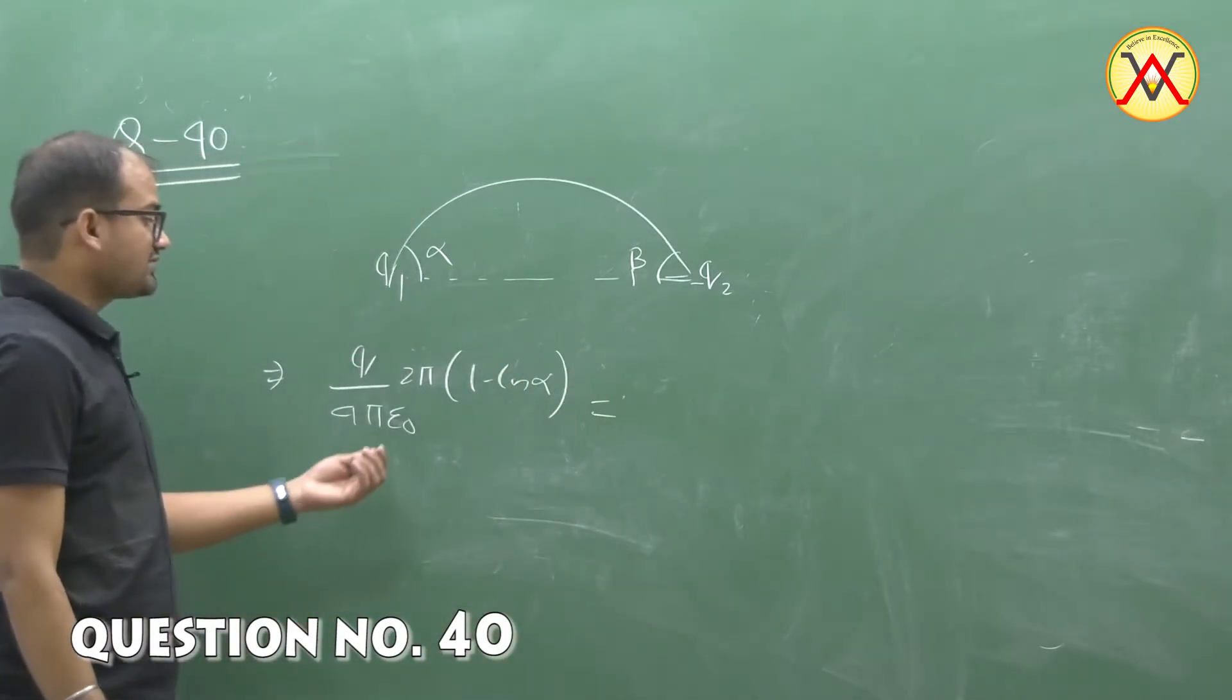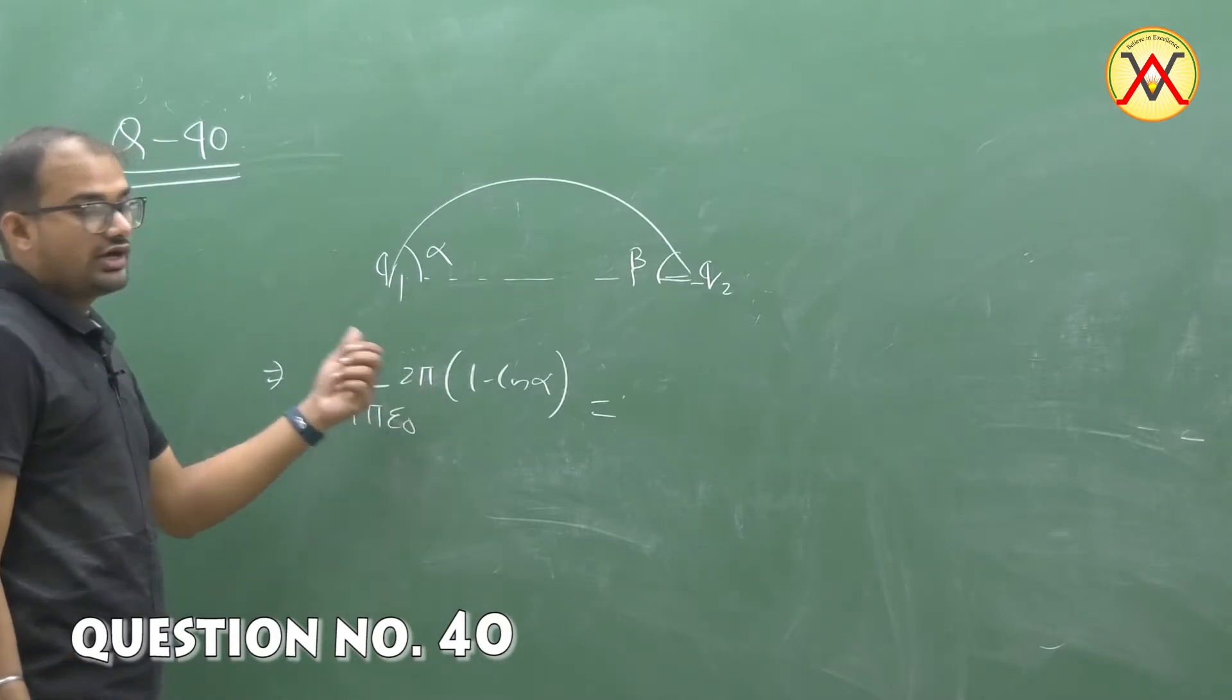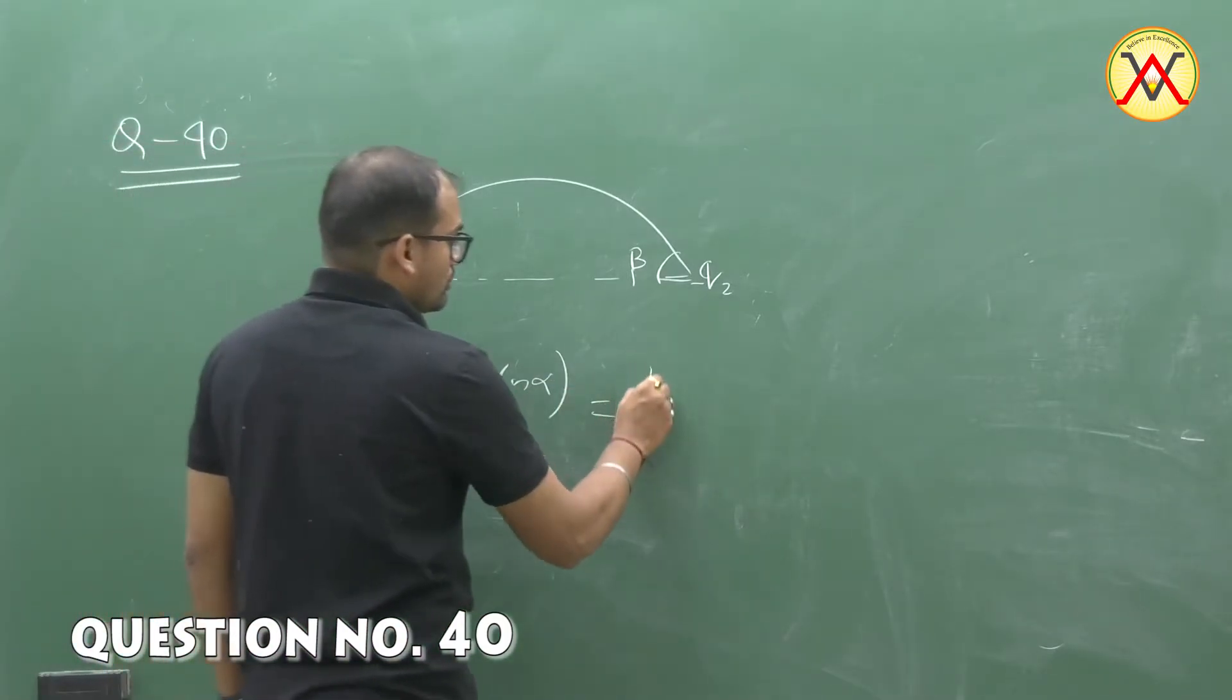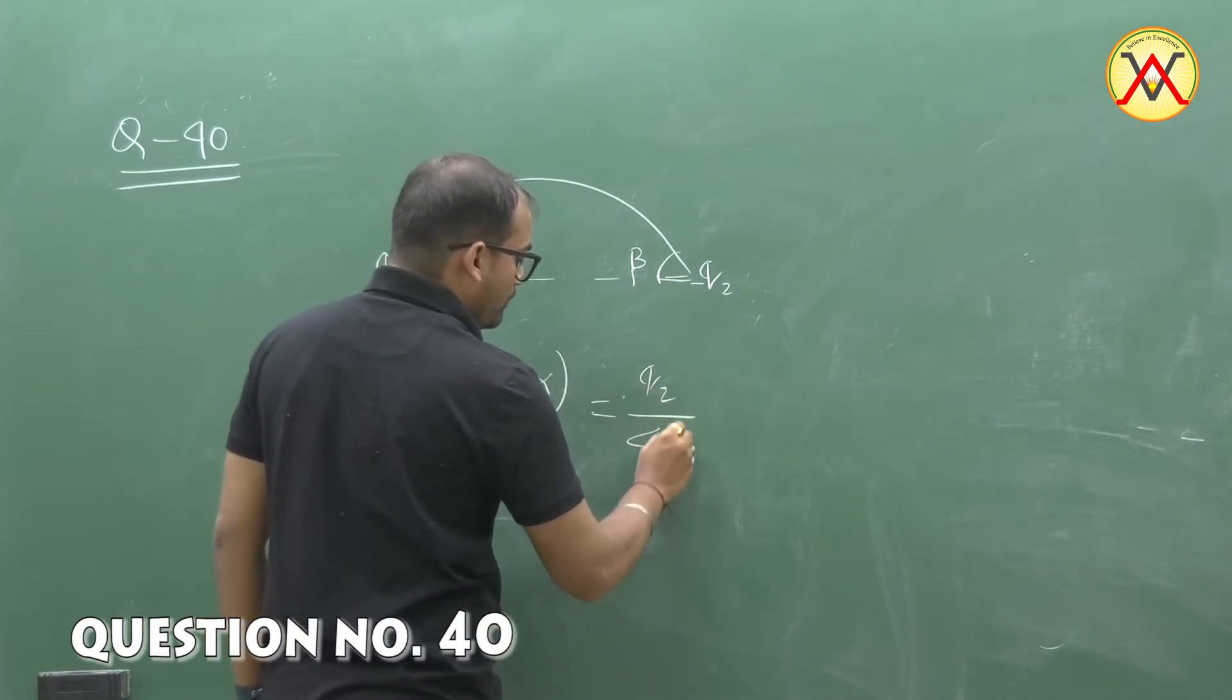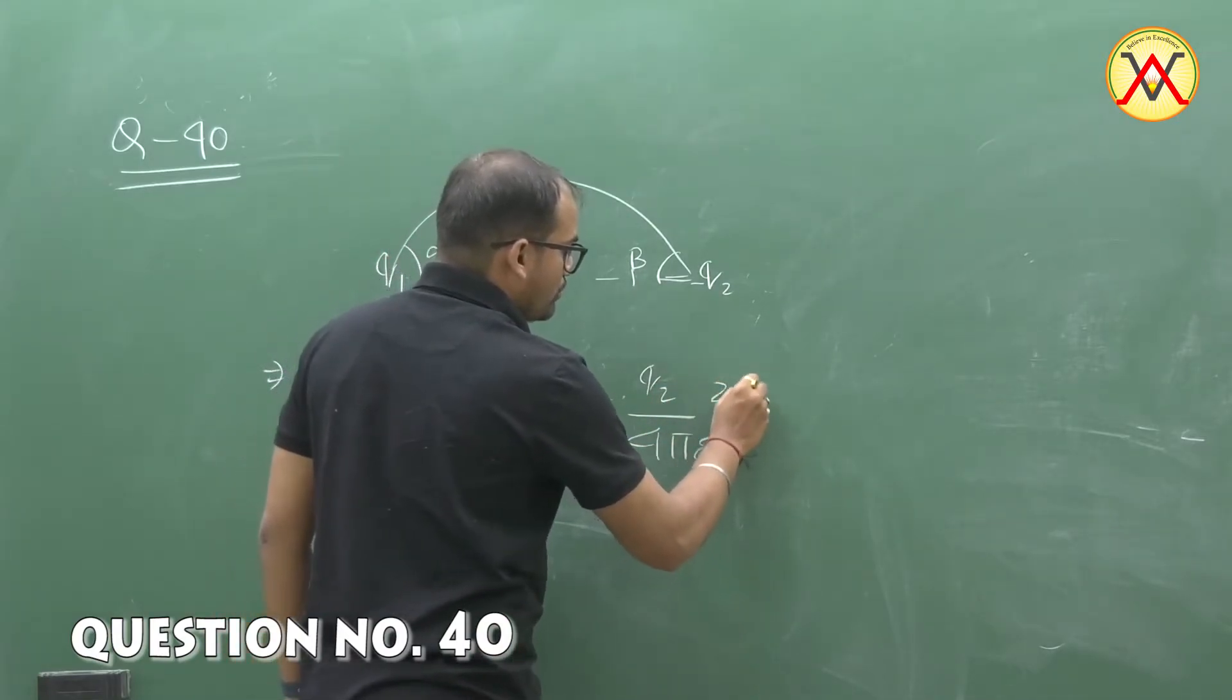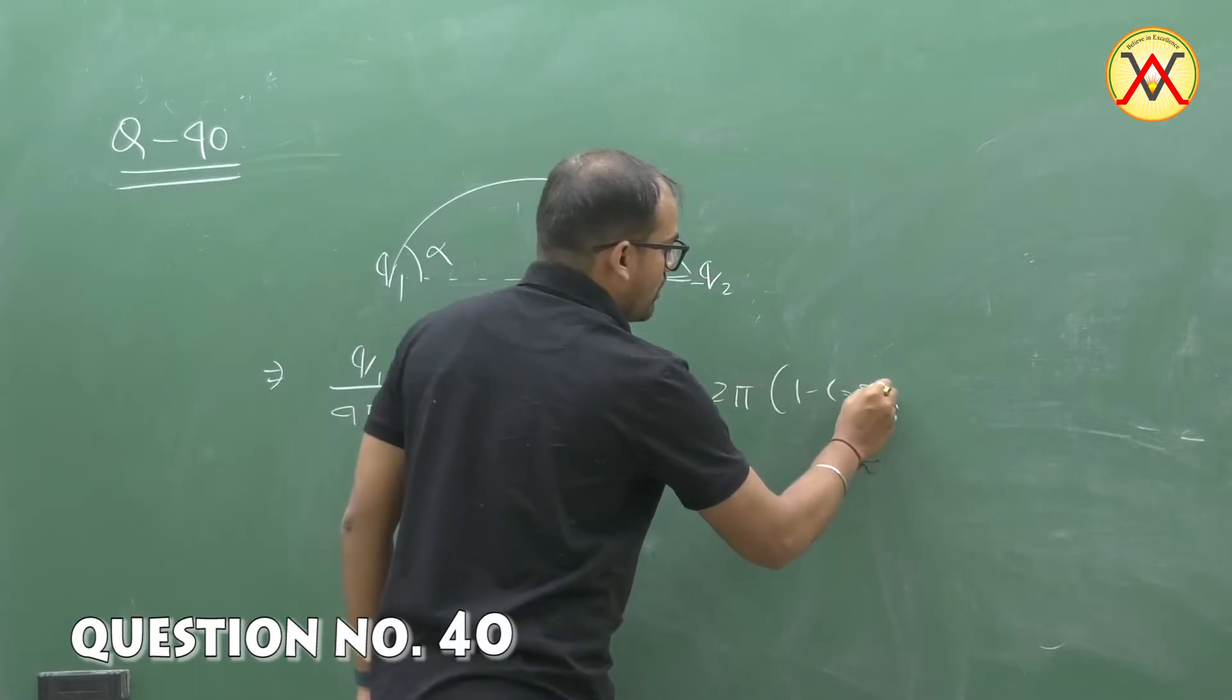The flux related by the solid angle. This should be equals to Q2 by 4 pi epsilon naught into 2 pi 1 minus cos beta.